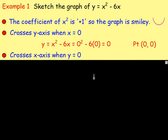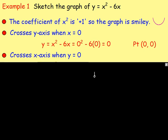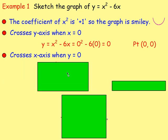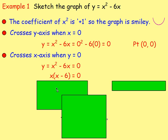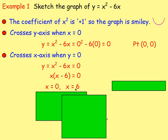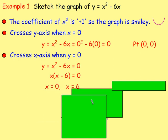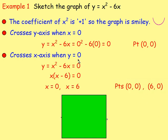To find where it crosses the x-axis, let y equal zero: zero equals x squared minus 6x. Factorizing, take out x as the highest common factor, giving x(x minus 6) equals zero. So either x equals zero or x minus 6 equals zero, meaning x equals zero or x equals six. The graph crosses the x-axis at (0, 0) and (6, 0).